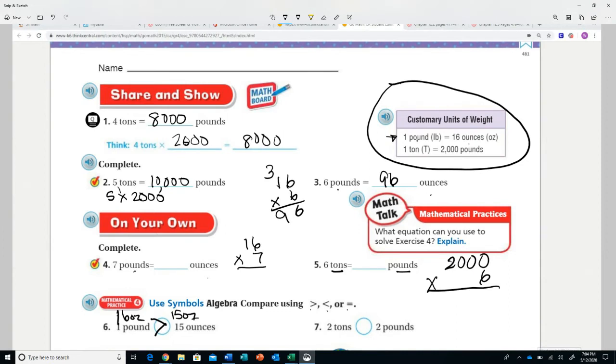Two tons versus two pounds - this is really just checking vocabulary. If you know that two tons is 4,000 pounds, or even if you know a ton is 2,000 pounds, that is automatically going to be greater. Not too difficult of a lesson.